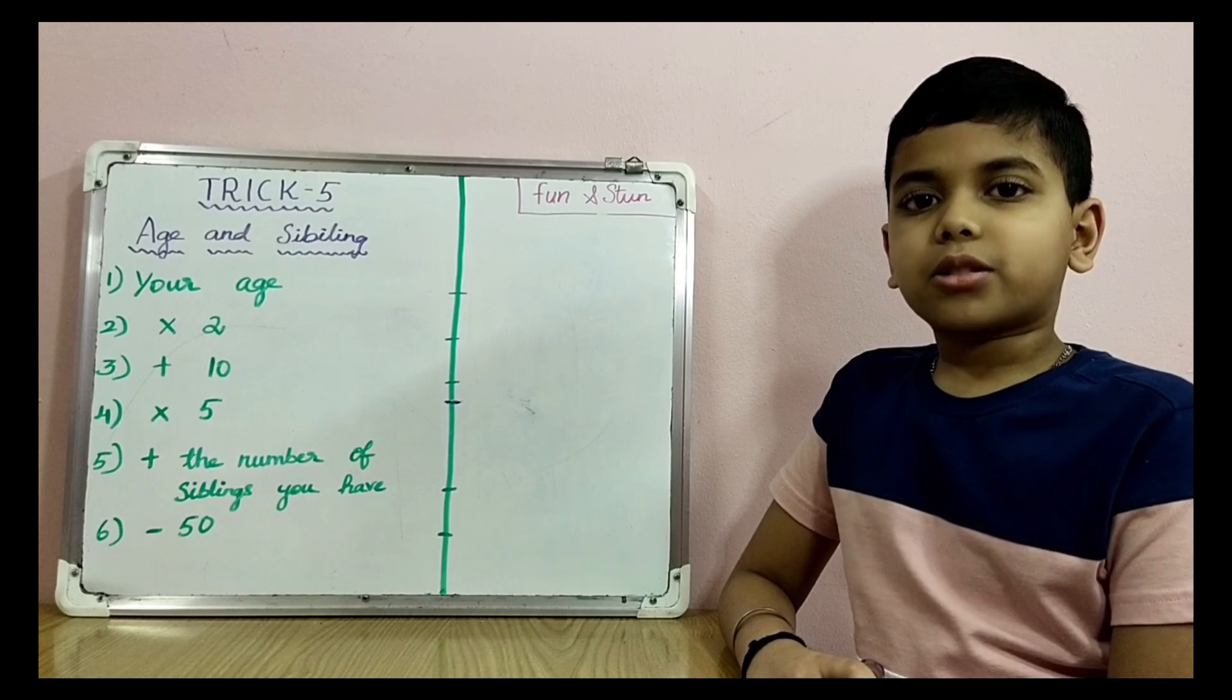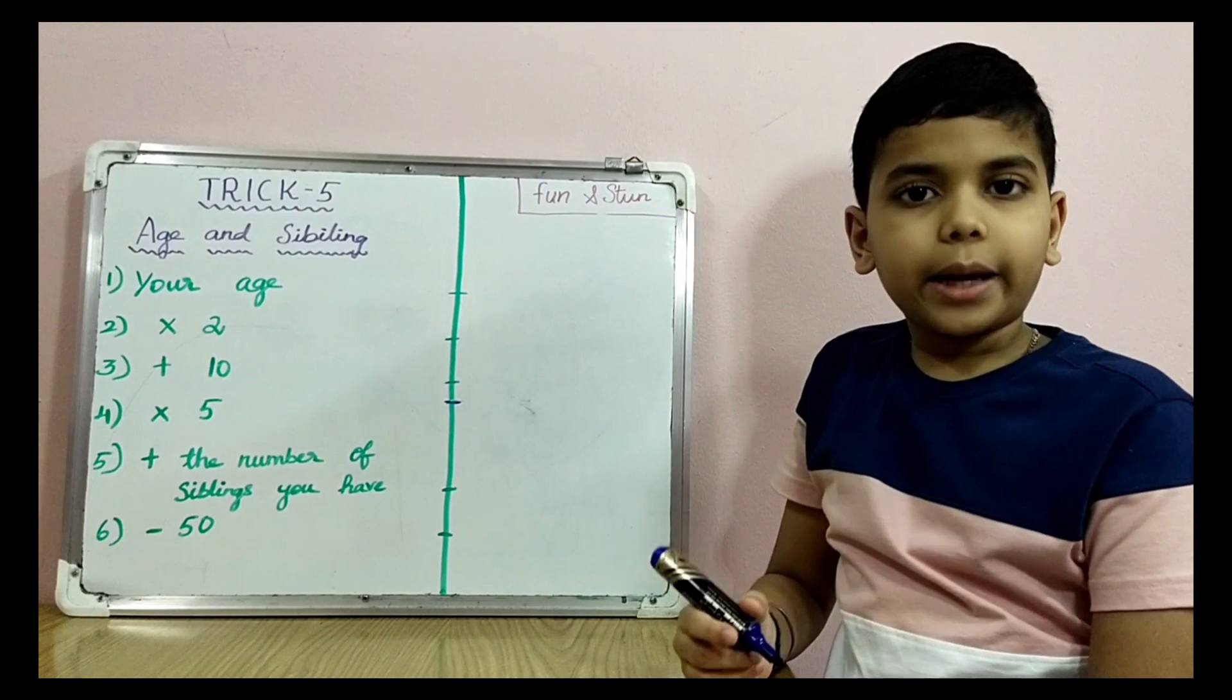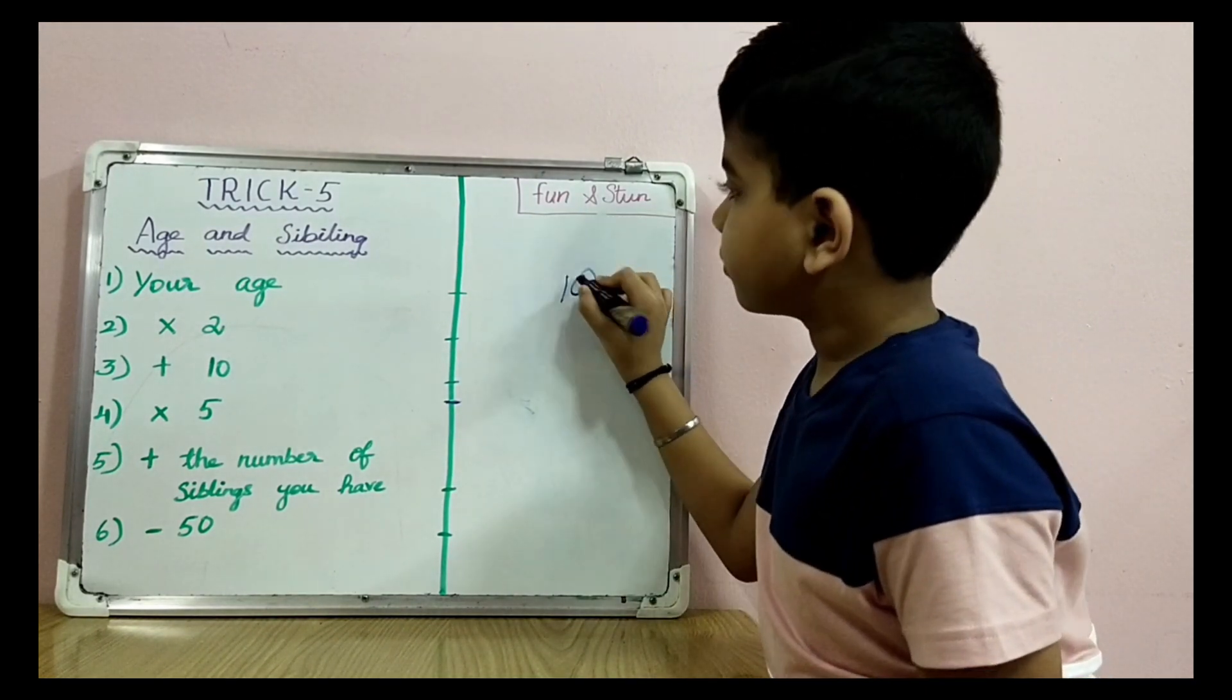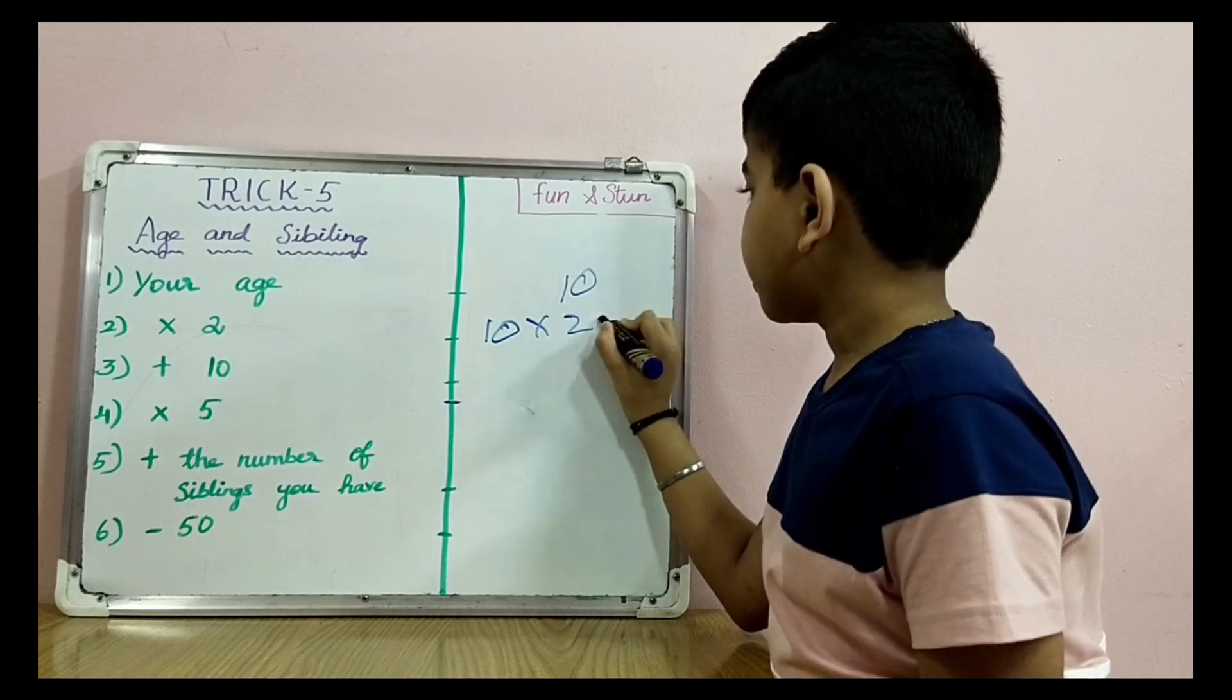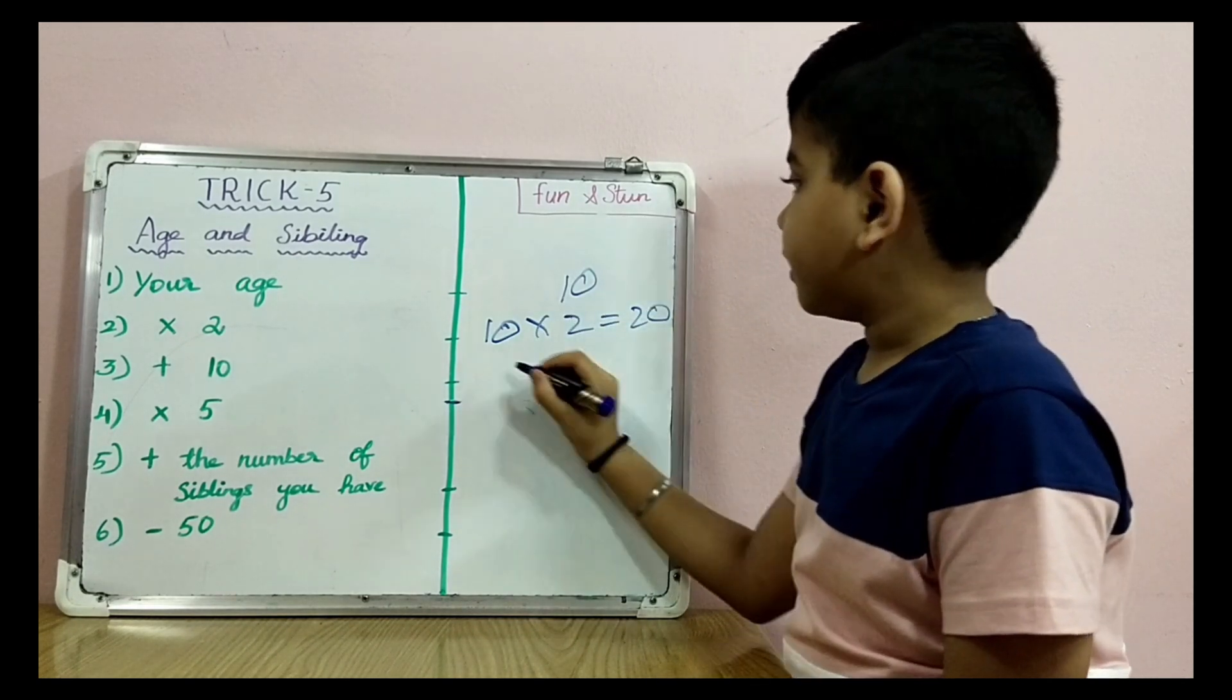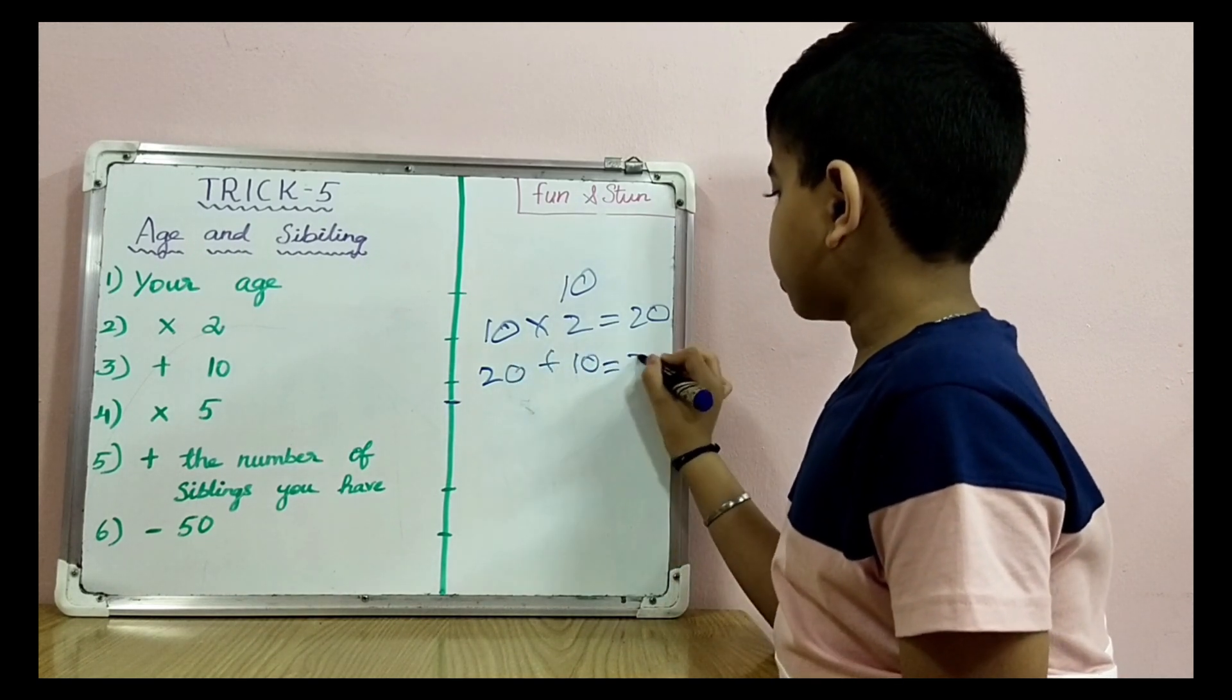Trick 5. Let's try an amazing trick to find your age and siblings. Your age: I am 10. Times 2: 10 times 2 equals 20. Plus 10: 20 plus 10 equals 30.